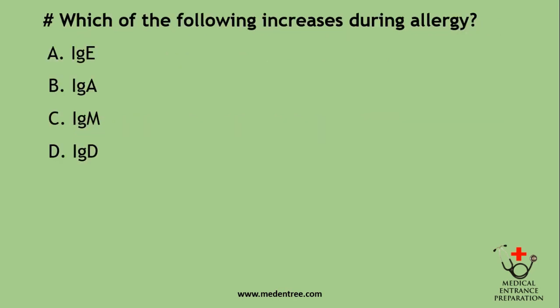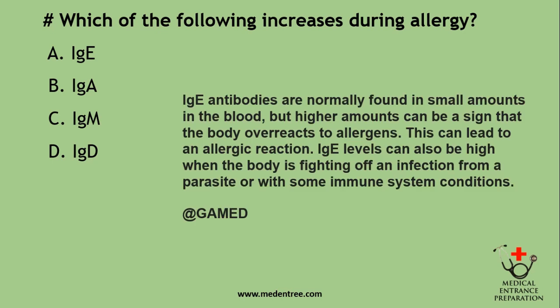Which of the following increases during allergy? Immunoglobulin E, Immunoglobulin A, Immunoglobulin M, or Immunoglobulin D? IgE — Immunoglobulin E antibodies are normally found in small amounts in the blood, but higher amounts can be a sign that the body overreacts to allergens, leading to an allergic reaction. IgE levels can also be high when the body is fighting off a parasitic infection or with some immune system conditions. The correct answer is IgE.